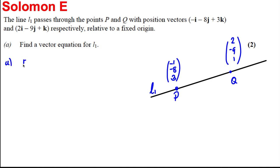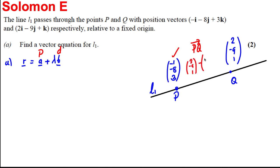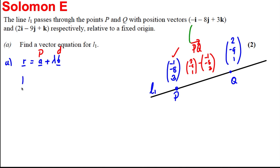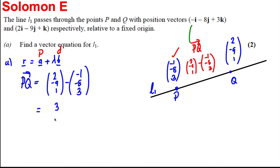For the equation of the line, R is usually equal to A plus lambda B, where A is a point on the line and B is the direction of the line. We've got two points on the line, so let's use P as our point. We don't have a direction, but we can work out the direction P to Q: that's Q minus P, which is (2, negative 9, 1) subtract (negative 1, negative 8, 3), giving us (3, negative 1, negative 2). That's the direction of the line.